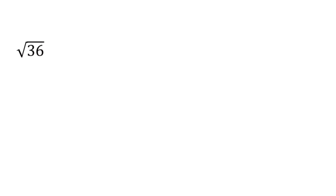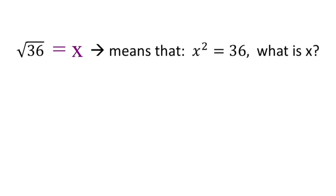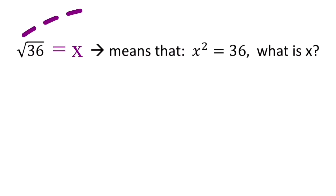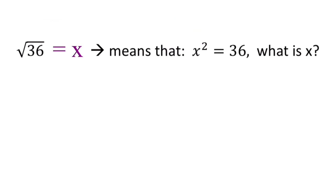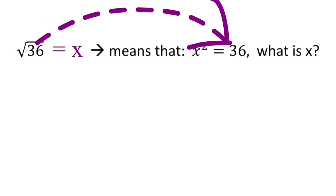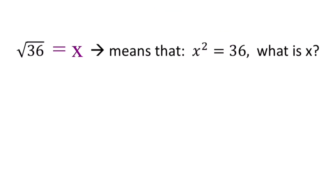This expression is read as 'a times the nth root of c.' For example, the square root of 36 equals x. We can rewrite this into its equivalent exponential form, which means x squared equals 36. Notice that x becomes the base, the invisible index of two becomes the exponent, and the radicand 36 becomes the answer to the exponential expression.